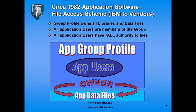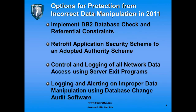Some options for fixing this and protecting against improper data manipulation in 2011: you can implement DB2 database check constraints and referential constraints to improve database integrity. You can retrofit your application security to an adopted authority scheme instead of the old scheme where all users own all data. You can control and log access coming through network interfaces like ODBC and FTP using server exit programs — not only to control access but also to log it.